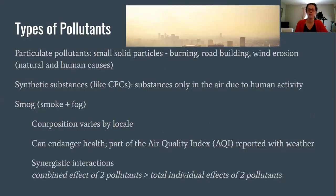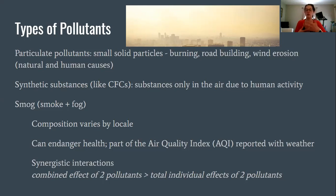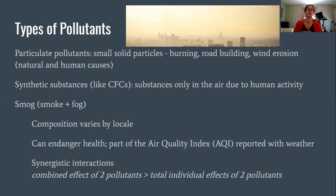Another type of pollutant is particulate pollutants — any type of small solid particles that get kicked up into the air. It could be from burning and the resulting ash, from road building where a lot of material gets stirred up, or even from wind erosion where rocky surfaces erode and particles get kicked up into the atmosphere. They might settle somewhere else, but those solid particles are in the air in the meantime. There are both natural and human causes for particulate pollutants.